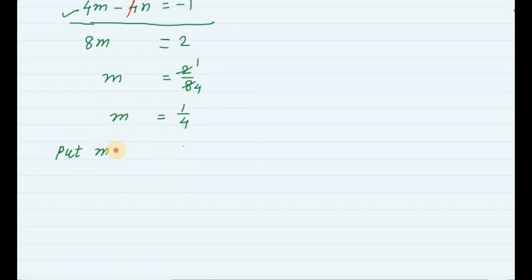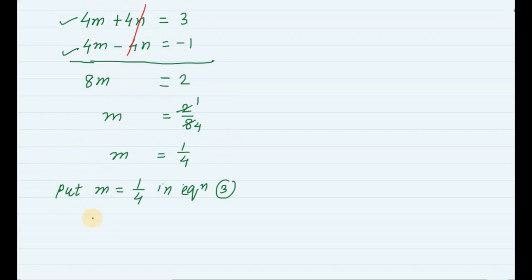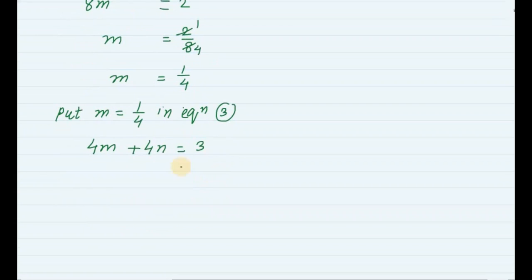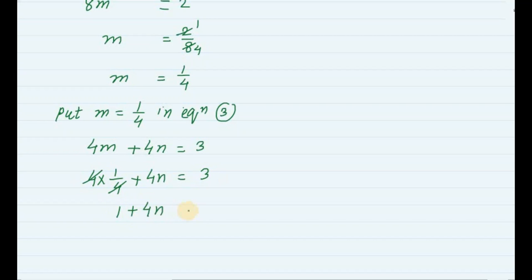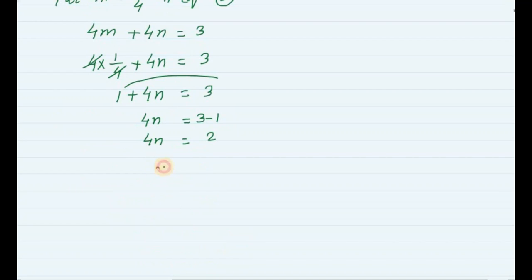Now put m equal to 1 by 4 in equation 3. Equation 3 is 4m plus 4n equals 3. Substituting: 4 into 1 by 4 plus 4n equals 3, which gives 1 plus 4n equals 3. So 4n equals 3 minus 1, which is 2, therefore n is equal to 2 upon 4, which simplifies to n is equal to 1 upon 2.